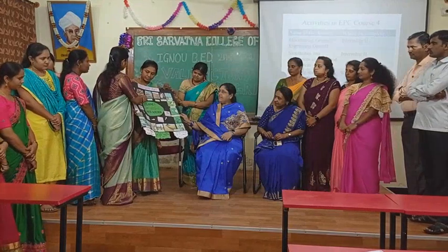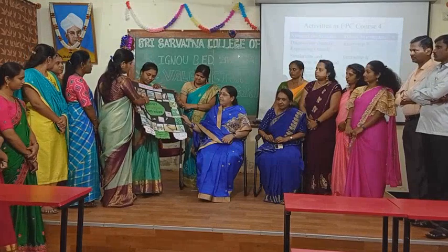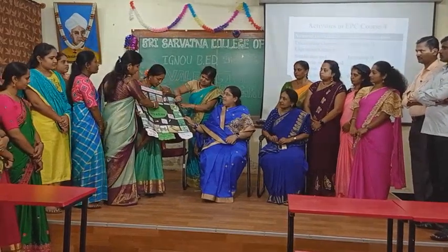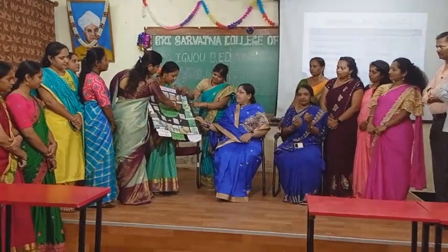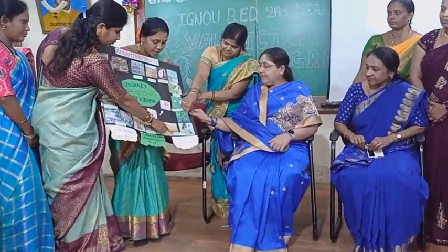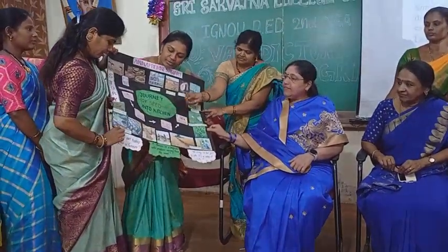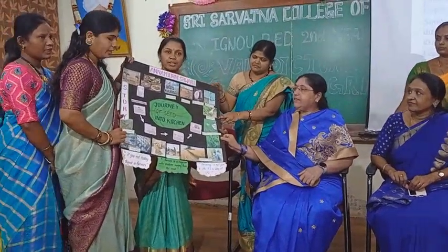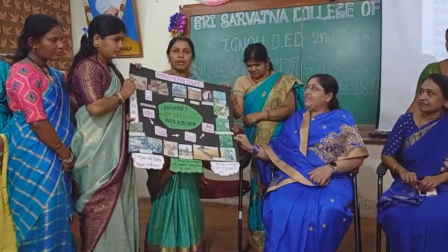Our friends are going to explain the process that takes place. In the field, the farmer first does ploughing, then sowing, germination, irrigation, weeding, adding fertilizer or manure, harvesting, winnowing, packing — and then it comes to the market. Such a big struggle is done by the farmer.